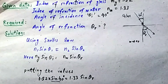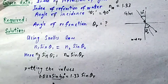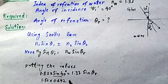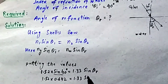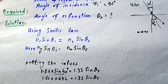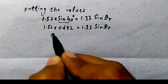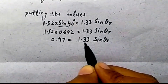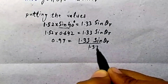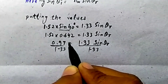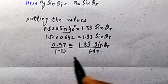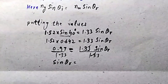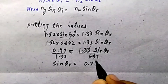sin(40°) ≈ 0.642. Multiply: 1.52 × 0.642 = 0.97. So 1.33 × sin(theta_R) = 0.97. Divide both sides by 1.33, giving sin(theta_R) = 0.73.